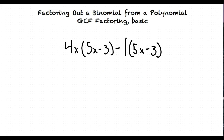For example, if we look at the problem 4x times (5x minus 3) minus (5x minus 3), we factor out (5x minus 3) from the polynomial using the distributive property. We would first get (5x minus 3), and since there is no binomial in front of the second term in the polynomial, we would get (4x minus 1).